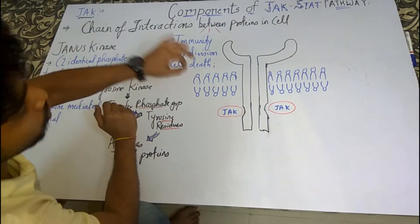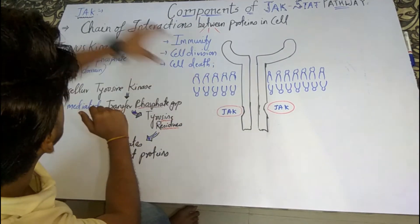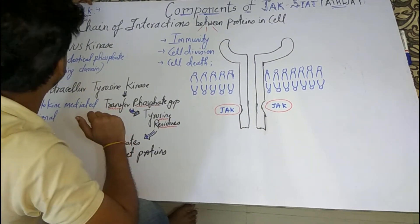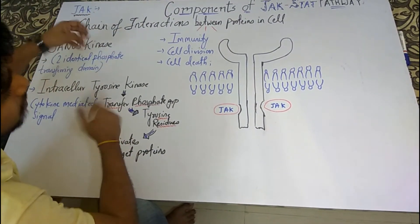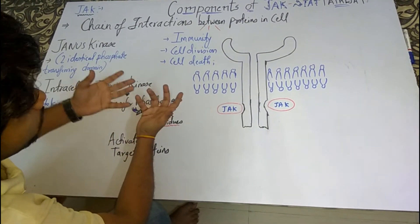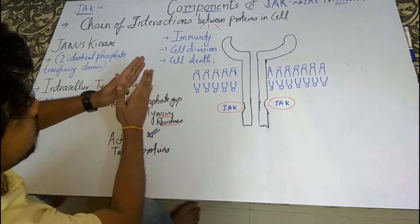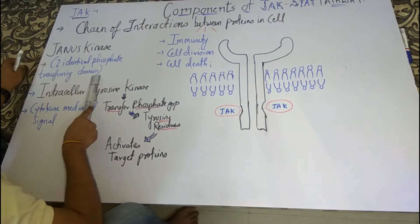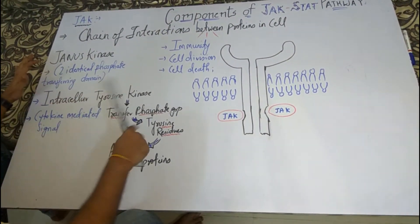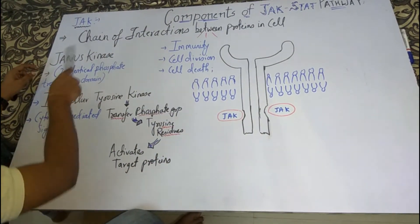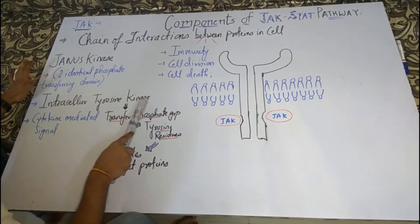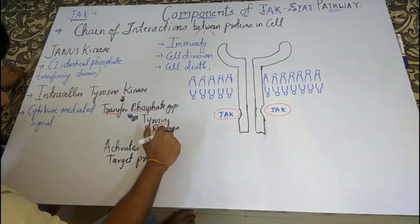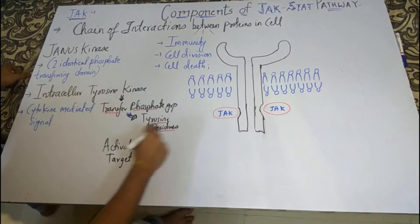This interaction ultimately leads to gene expression. JAK stands for Janus Kinase, and the name is derived from the two-faced Roman god, which represents beginning and ending — because JAK initiates the signaling pathway. It has two identical phosphate-transferring domains because it transfers phosphate to tyrosine residues. JAK, or Janus Kinase, is also known as an intracellular tyrosine kinase.